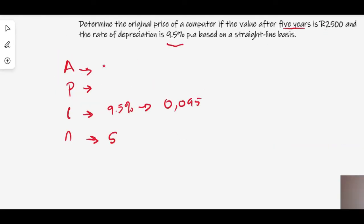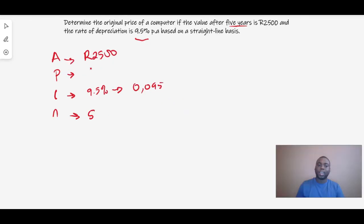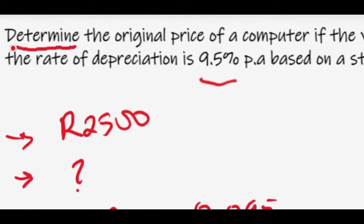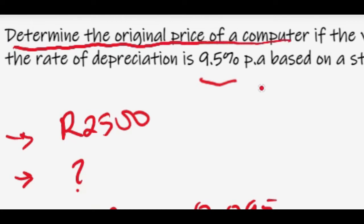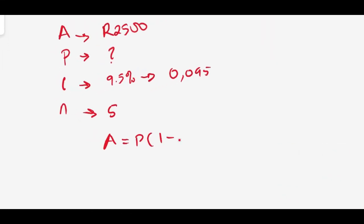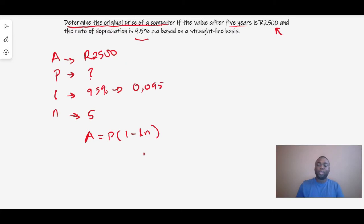A is 2500, and P is what we're trying to find. We know we're trying to find P because the question says 'determine the original price of a computer.' So we substitute these values into our formula and solve for our answer.